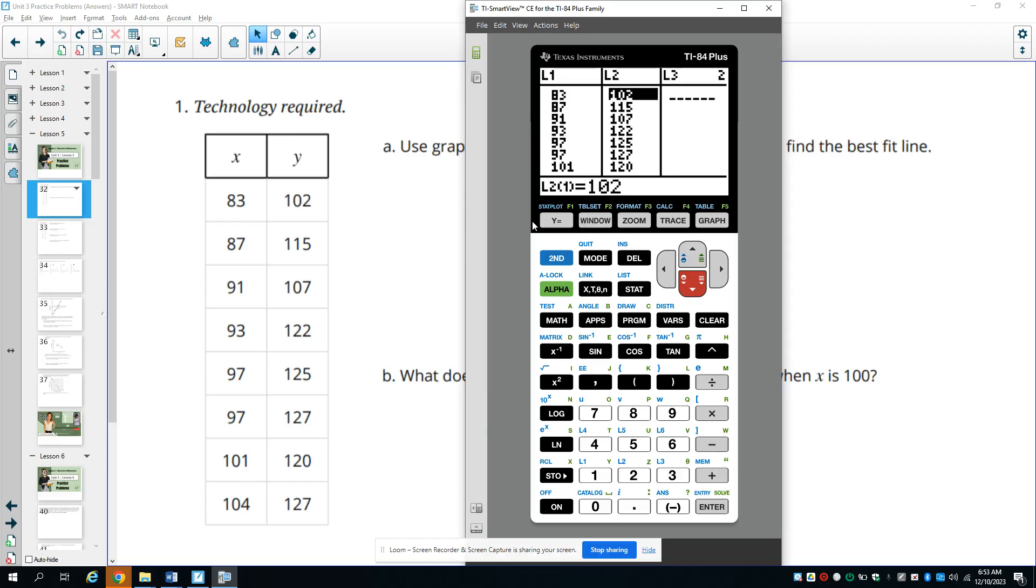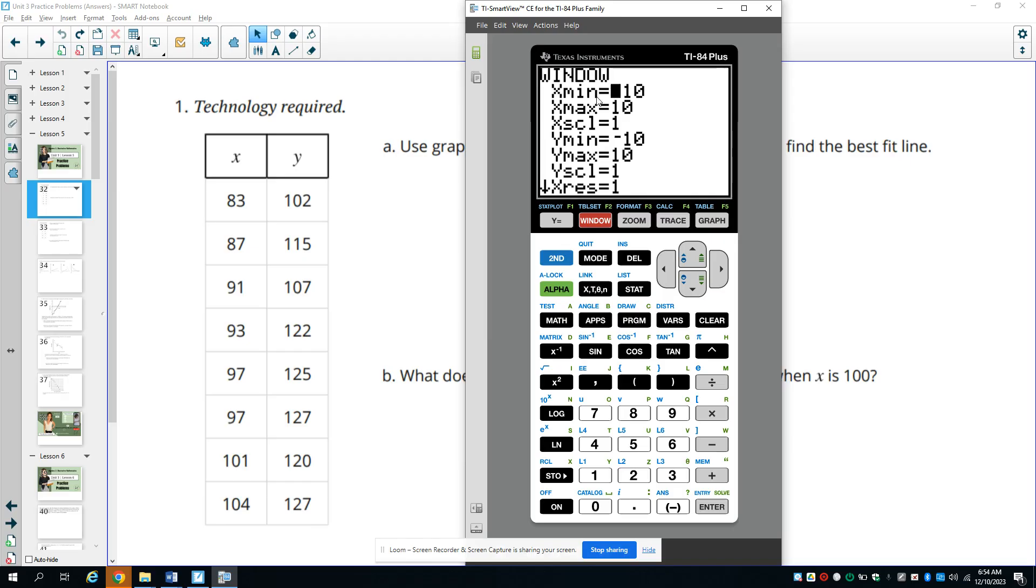Then what you're going to want to do is if we're going to actually do a scatter plot, which this asks us to do, we want to make sure our window is set for these data points. Because if you hit graph right now, you're not going to see anything in your window. Number one, because you haven't done a scatter plot. Number two, because your window is not correct. So let's change our window first.